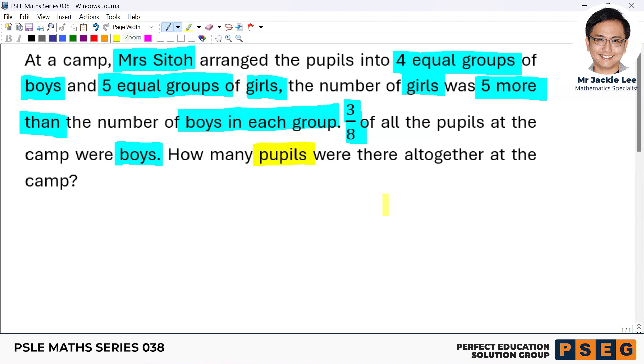So what we do now is for the boys and girls, for the boys, let's say four equal groups. So let's say each group we have X, so we have something like this. So all these are X, X, X, X. So collectively, these are 4X. Collectively, 4X.